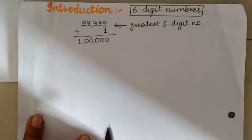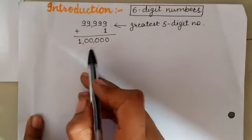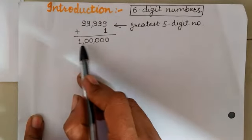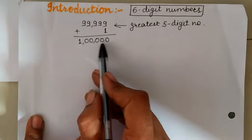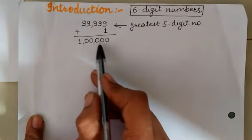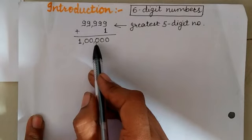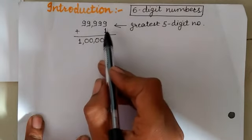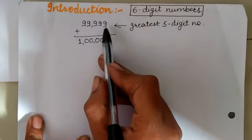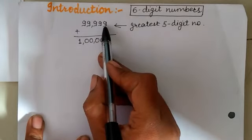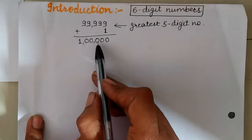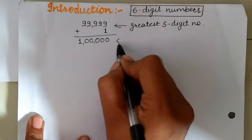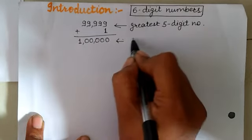Our answer is 1 lakh. This is the 6-digit number. If we add 1 to the greatest 5-digit number, then we get the answer 1 lakh, which is the 6-digit number.